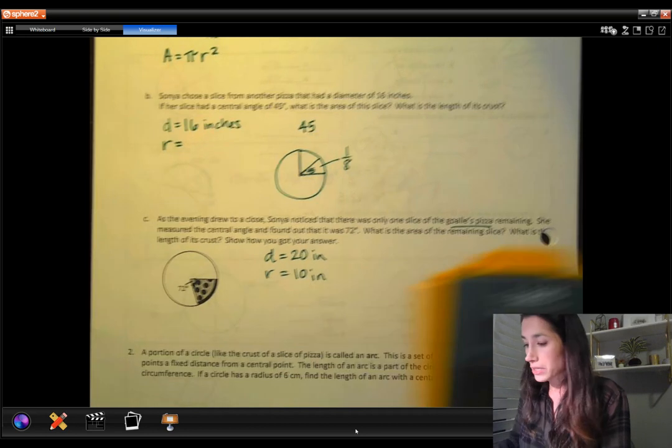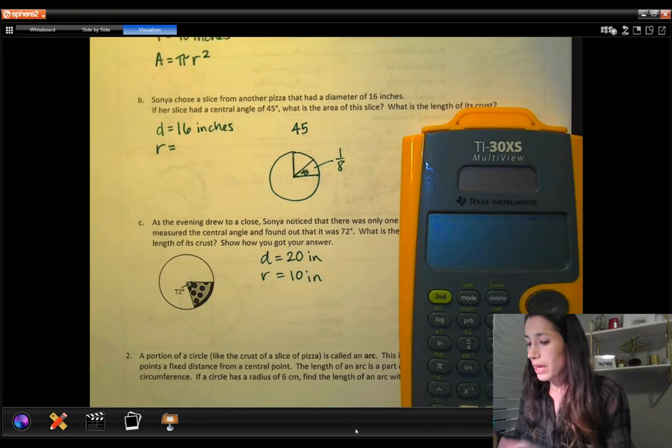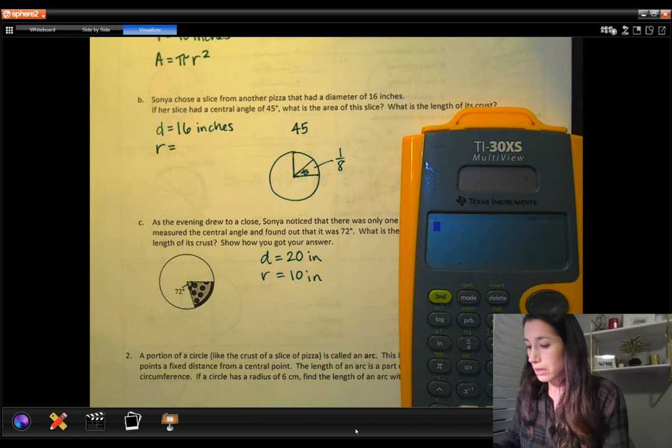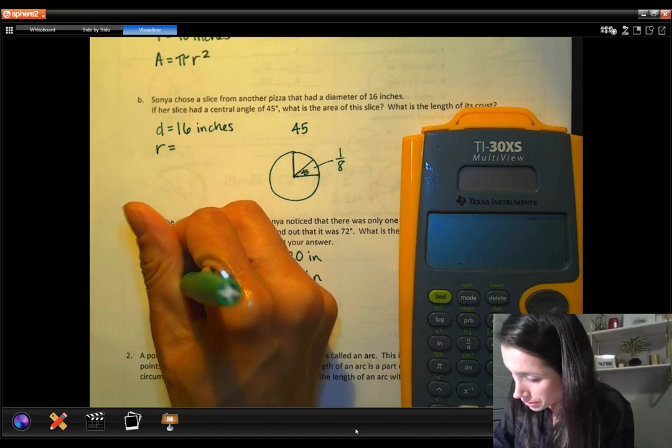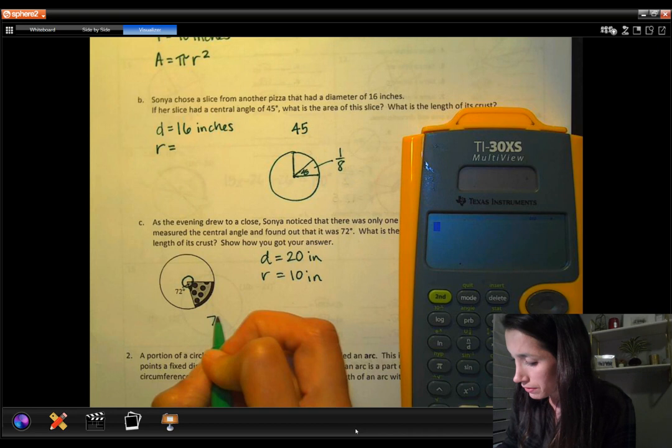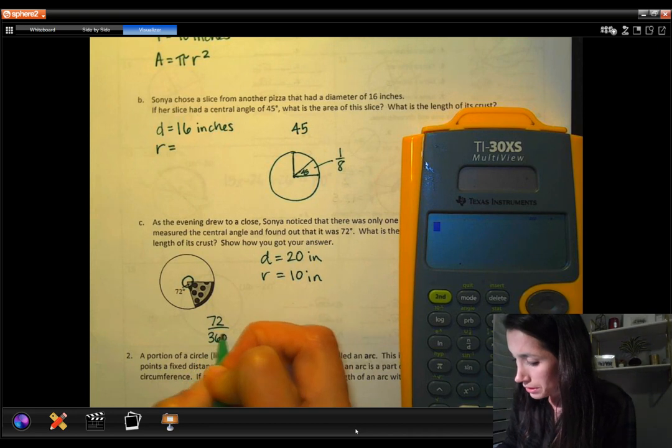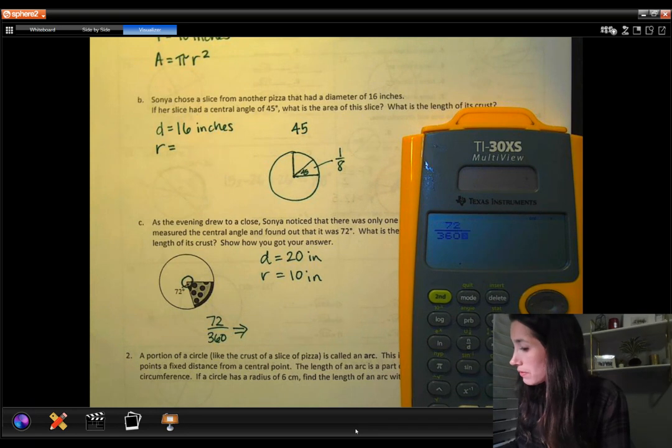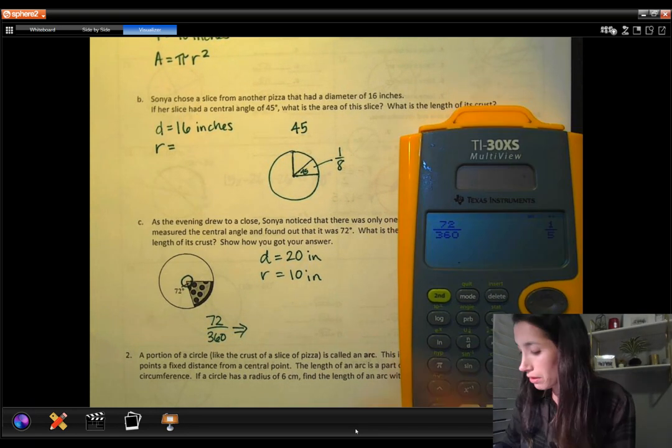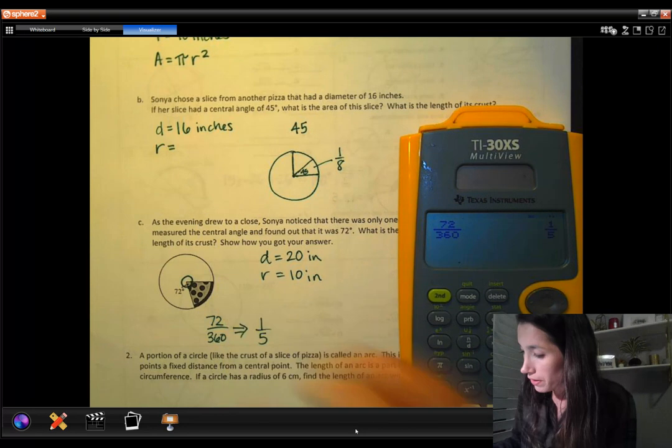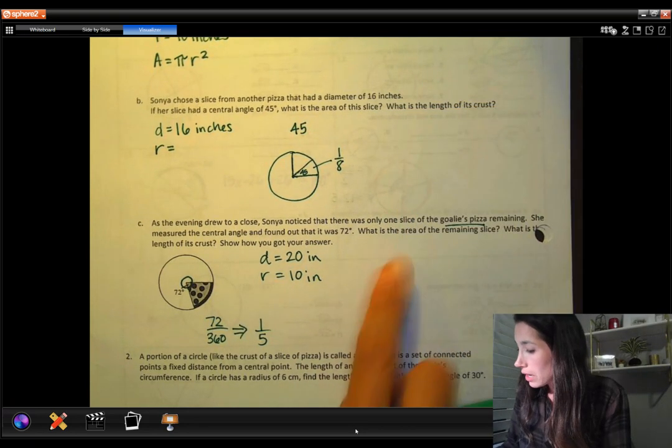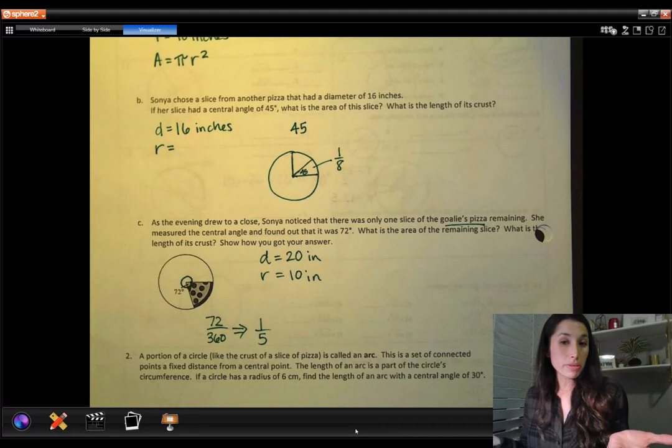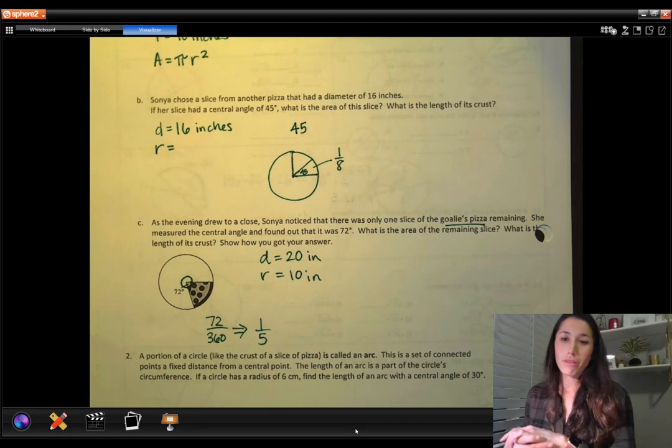We want to know what the area is for this piece. We need to know the area for the entire circle. So now we just figure out how many of these 72 degree slices will fit into that pizza. A full circle rotation is 360. So what is 72 out of 360? Let's simplify that. 72 over 360 is 1/5. So when we want to find the area of the remaining slice, I basically just take the area of the entire pizza, multiply it by 1/5.